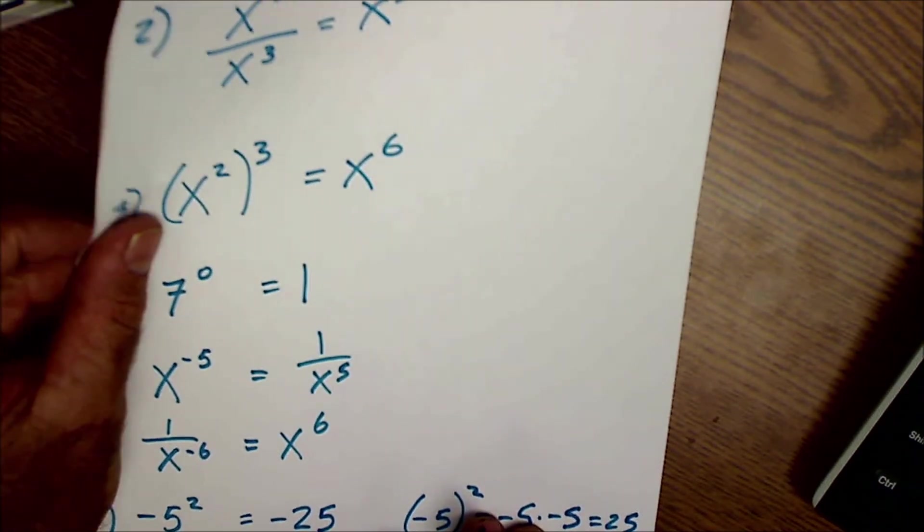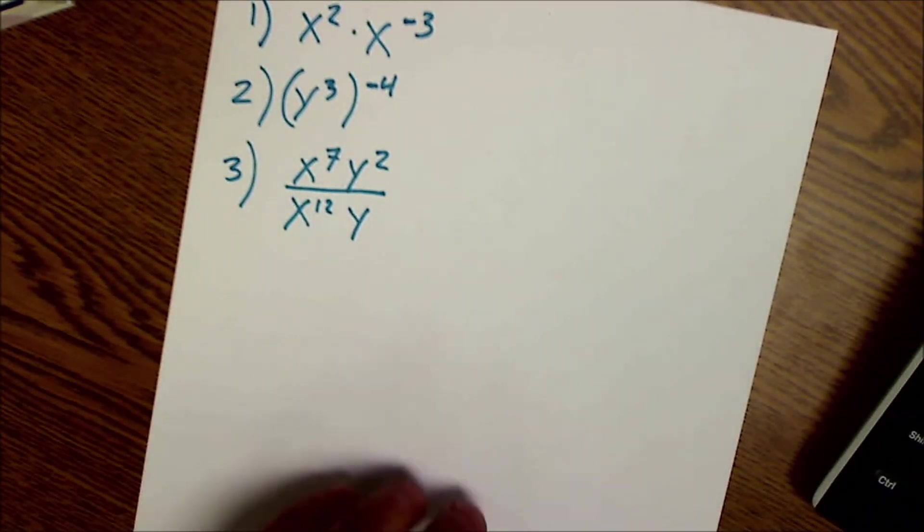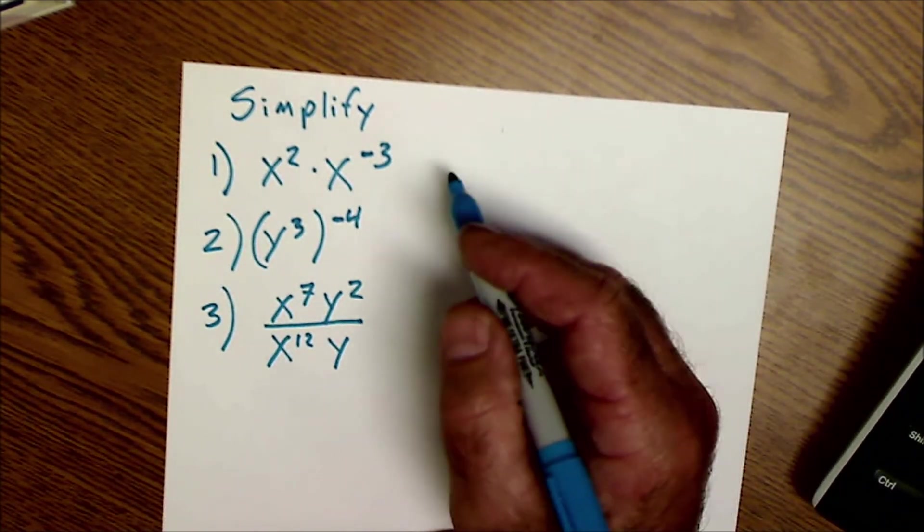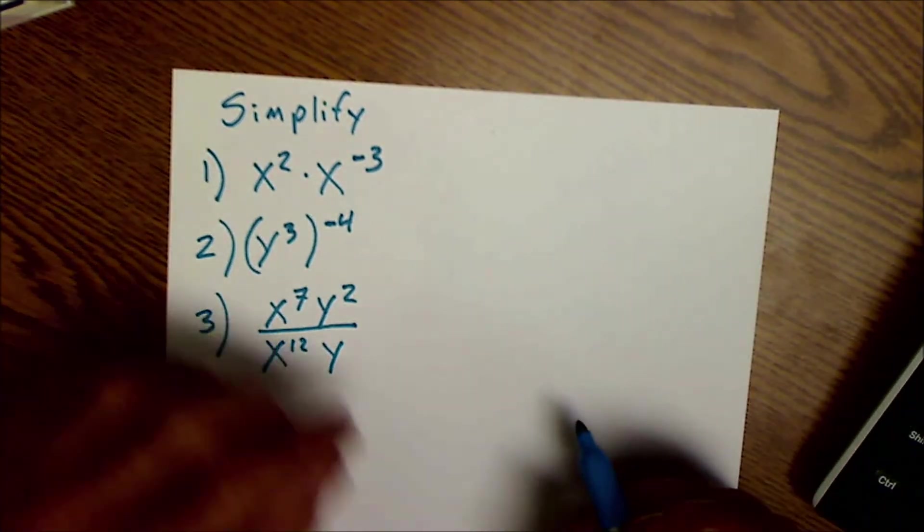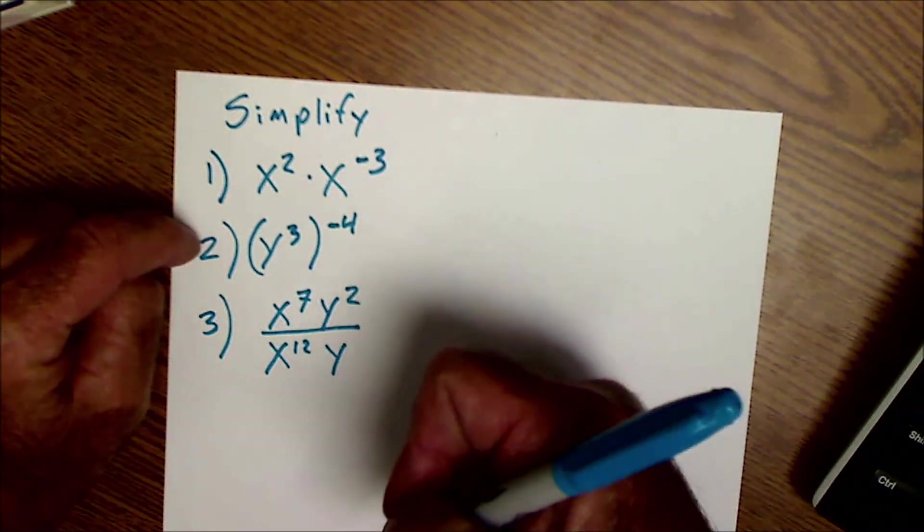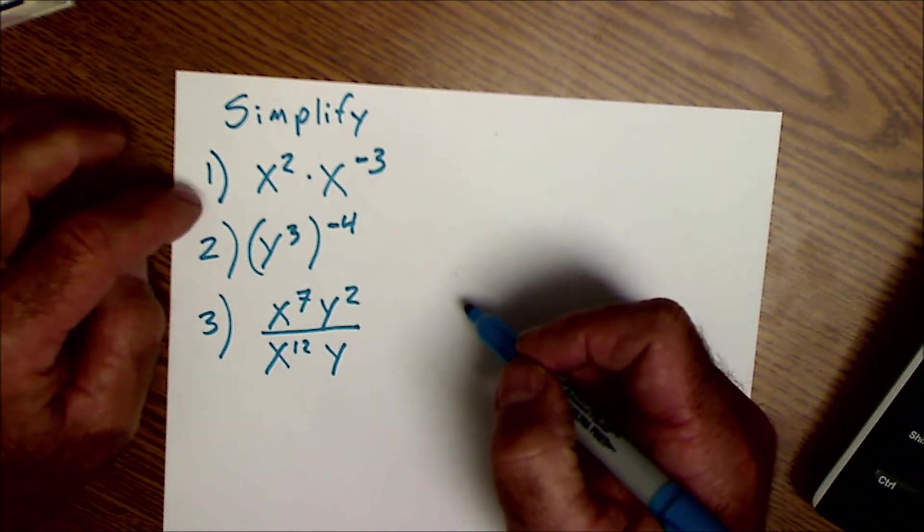All right, let's just do a few more and we'll wrap it up. Again, these aren't solving because there's no equal sign, there's no equation. Here you're just going to simplify. Again, pause the video, do these three problems, and then I'll go over them.